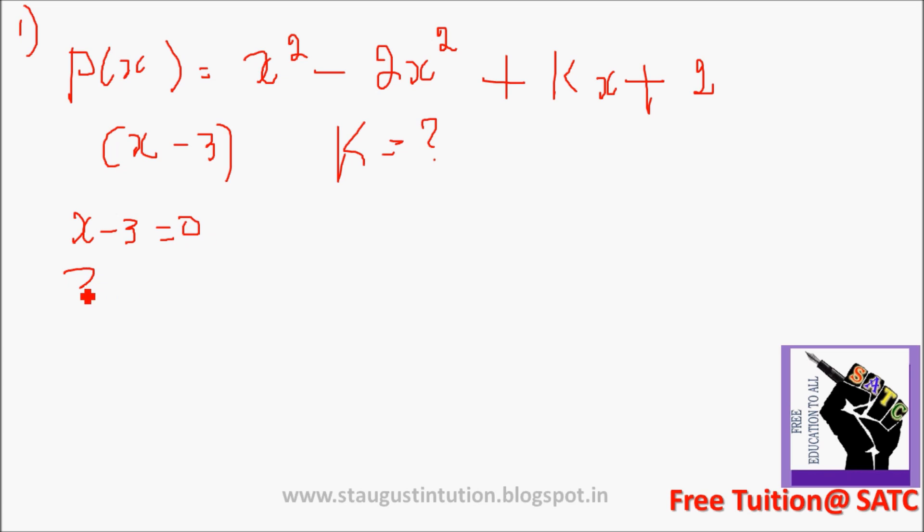Now x minus 3 is equal to 0. Therefore x is equal to 3. So minus 3 is positive. Then P of x, P of 3, is equal to 0.